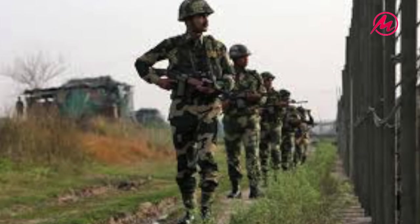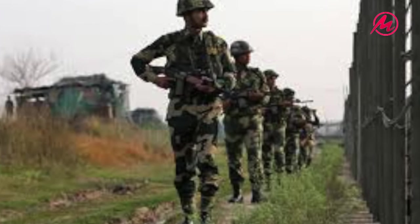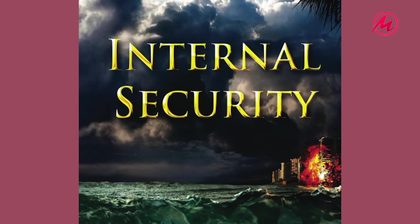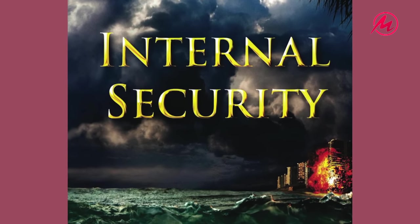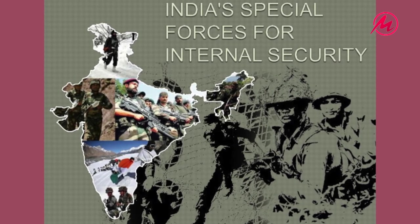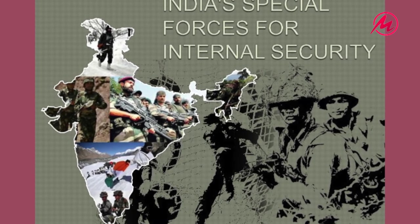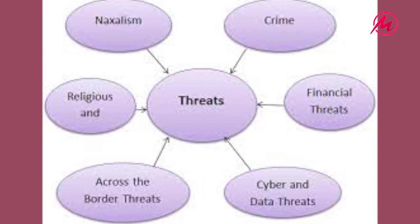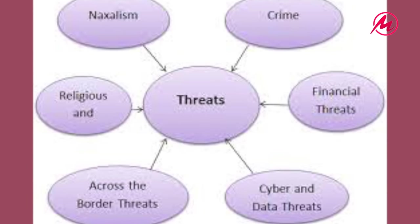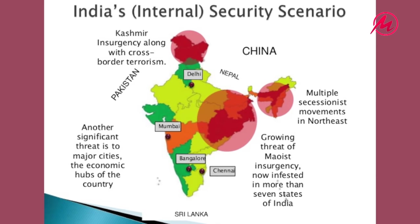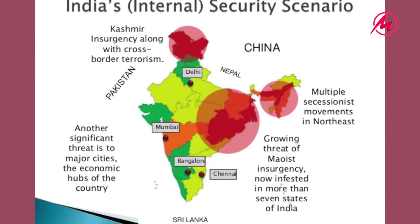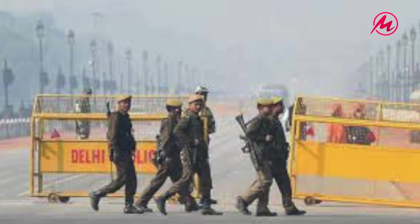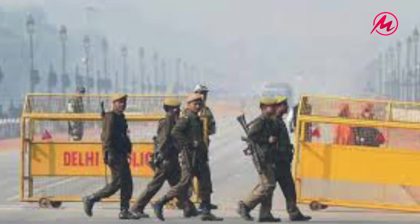Boundaries hastily drawn to give shape to new political entities did not follow any distinct physical features. These superimposed lines cut across ethnic, social and economic communities. Consequently, people of the same village often found themselves citizens of two different countries, separated by a line. Their livelihoods were severely threatened by the disruption of trade as barriers were erected in the way of the smooth flow of cargo and passengers.